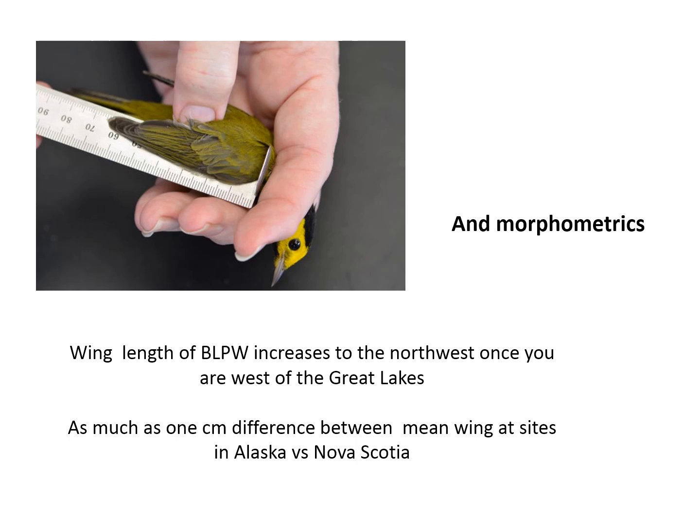The data we used for this purpose is wing length. Wing length tends to be longer the farther the bird has to fly, and migrants going to Alaska have routes that are almost twice as long as the routes to New England or Nova Scotia. Wing length does increase as you go west across the breeding range, and Alaskan birds have wings almost an entire centimeter longer than birds in Nova Scotia.